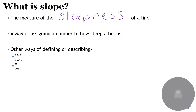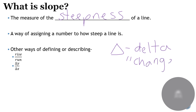You might also see this notation — this triangle is the Greek letter delta, and mathematically it means 'change in.' So another way of expressing slope is the change in y's divided by the change in x's. It's just another way of denoting rise, which is the change in y's — how much it goes up — divided by the run, which is the change in x's — how much are the x's changing by.